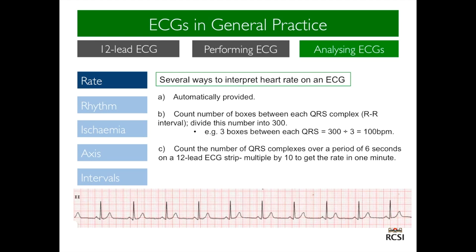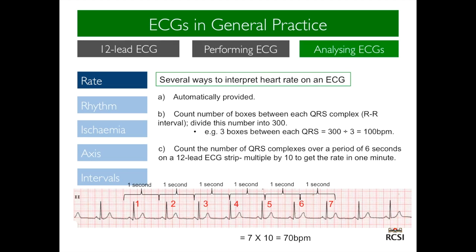Another method is to count the number of QRS complexes over a period of 6 seconds on a 12-lead ECG strip and multiply this by 10 to get the rate in one minute. As an example, counting over 6 seconds, one would count the number of QRS complexes within the 6-second strip. In this case, 7. 7 multiplied by 10 is 70 beats per minute.